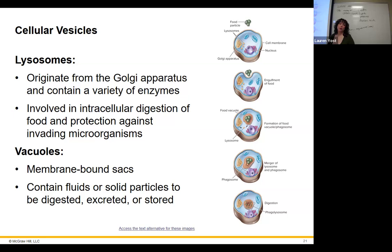Some vesicles the Golgi makes include lysosomes for digesting, and vacuoles for storage — typically storing water. Plant cells are like primarily vacuoles — they have large vacuoles containing a lot of water. If they dry out, they wilt because vacuoles are important for maintaining cell structure.